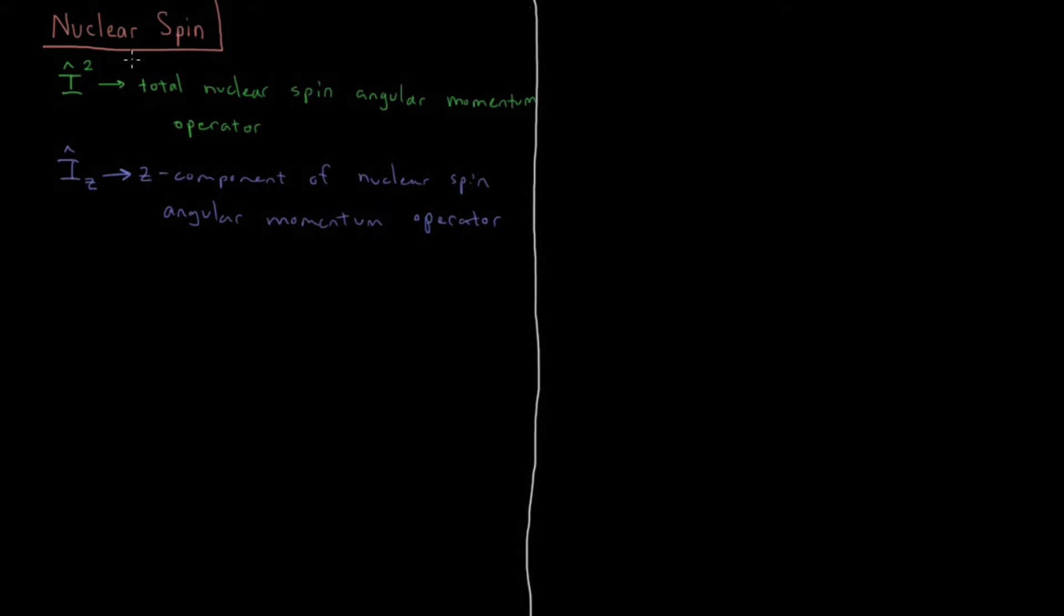We're going to have spin functions just like we had for electrons. We have spin alpha, the spin up wave function, and beta, which is spin down, the spin down wave function.